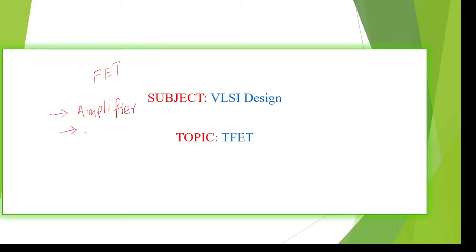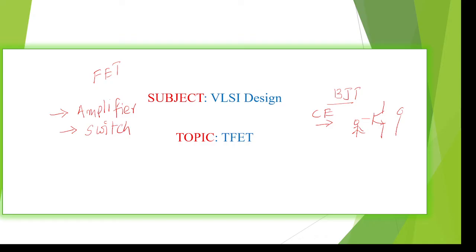Even if you take bipolar transistors, the main functions are the same. For example, the common emitter (CE) amplifier — it acts as an amplifier. Other configurations like common base or common collector also act as amplifiers and as switches.